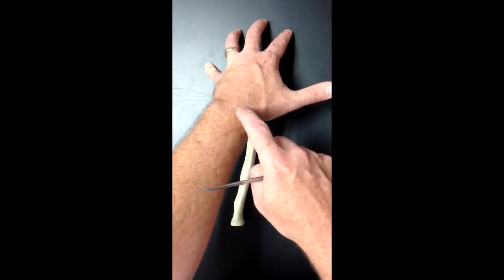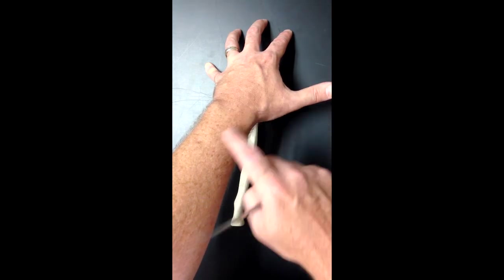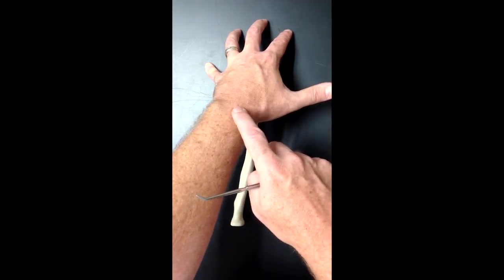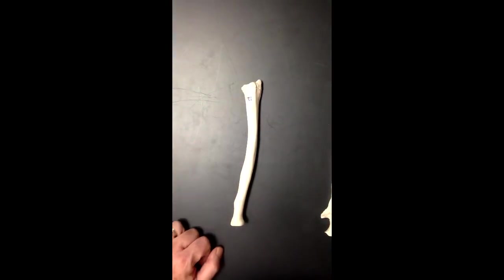That Lister's tubercle is going to be a fulcrum or a pivot point for that tendon. That tendon wraps around that bump for extra leverage. So that's Lister's tubercle right there and that's on the back of the radius.